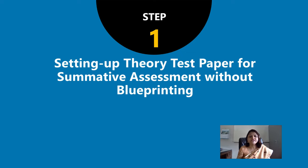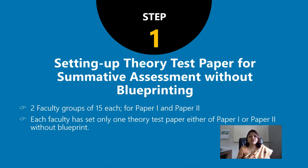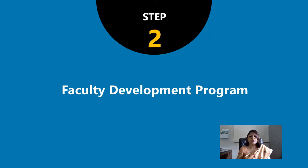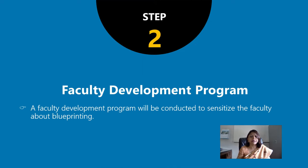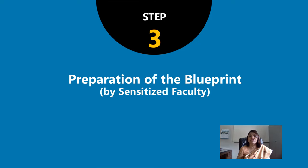There are total five steps in this project. Step one is setting up a theory test paper for summative assessment without a blueprint. We have given this task to you — we have divided you into two groups of 15 each, and each one of you is given to set one paper either on paper one or paper two. We are still receiving the papers from you. Once we receive these papers, we will move ahead with step two, wherein we will have a faculty development program to sensitize the faculty about blueprinting. We will release a separate video for that.